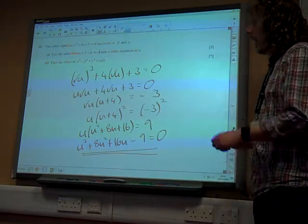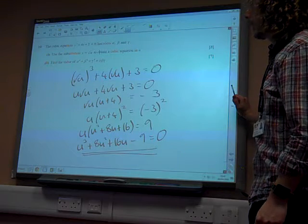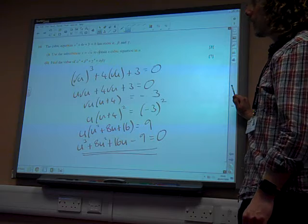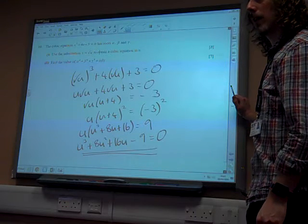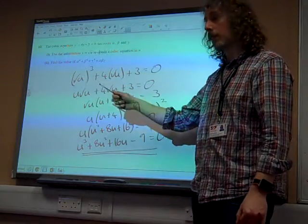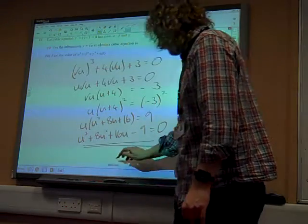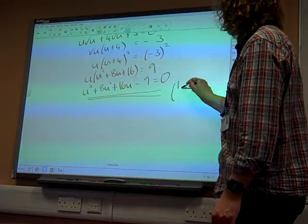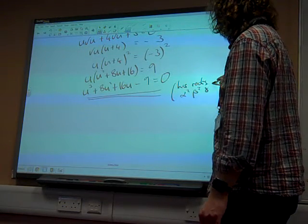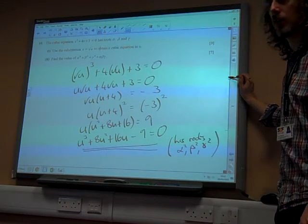And it's quite important, because actually it's going to be crucial in what we do in the next bit. Because what we've got to recognize now is that if x equals root u, then the roots of this equation here, u is x squared, so the roots of this are alpha squared, beta squared, gamma squared. That's important. So I'm just kind of flagging that up to see how we might use it.